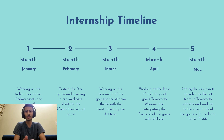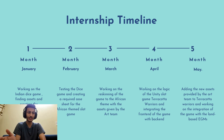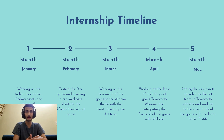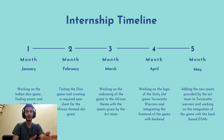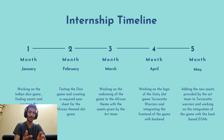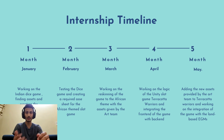The internship timeline over five months: in January, the first month, I worked on the Indian dice game, finding assets and creating the working logic. In February, the second month, I tested the dice game for the first half and then made the asset sheet for the African-themed slot game. By March, the third month, I received those assets and started working on re-skinning the game. In April, the fourth month, I started working on the logic of the Unity slot game Terracotta Warriors and integrating the frontend with the backend. In May, the fifth month, I started adding new assets from the art team, and will next be integrating the game with the land-based EGM machines.